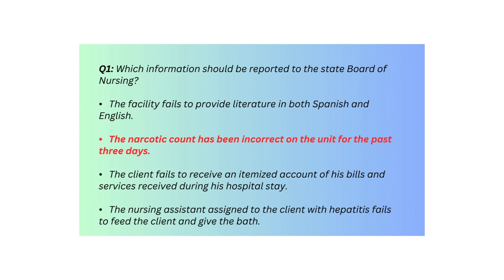Q1. Which information should be reported to the State Board of Nursing? The facility fails to provide literature in both Spanish and English. The narcotic count has been incorrect on the unit for the past three days. The client fails to receive an itemized account of his bills and services received during his hospital stay. The nursing assistant assigned to the client with hepatitis fails to feed the client and give the bath.